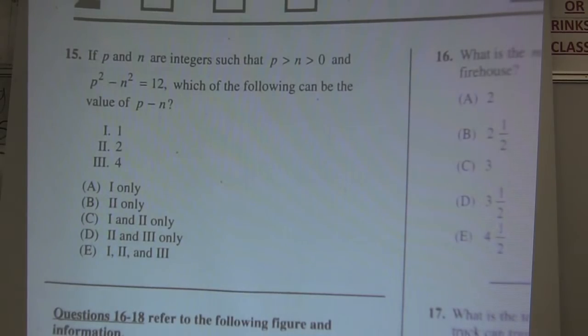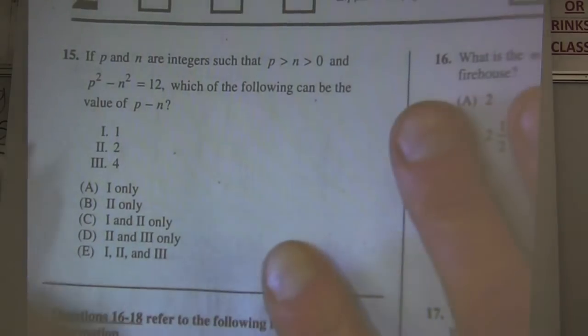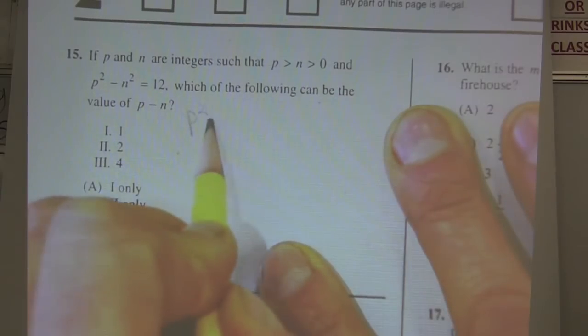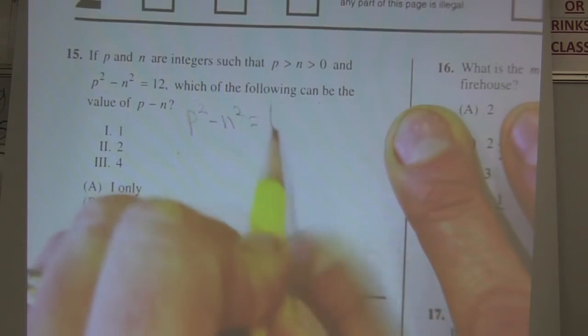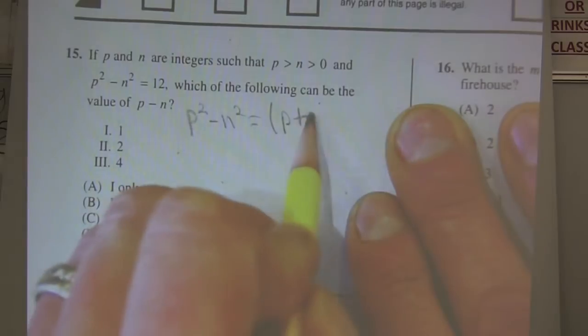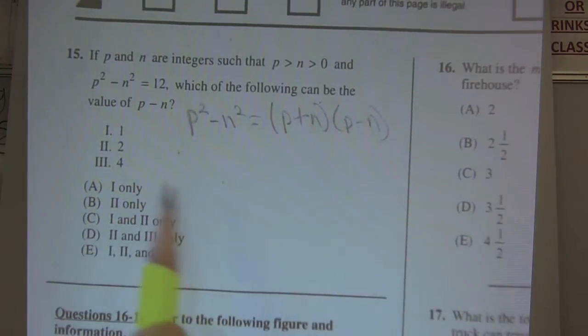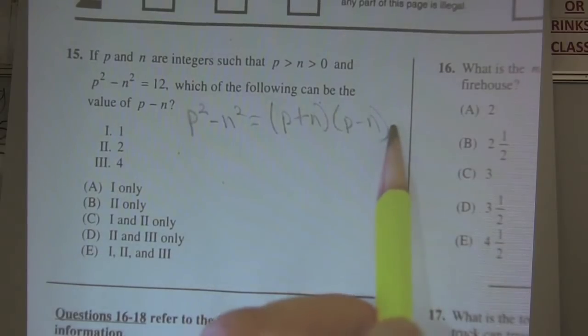Which of the following can be the value of p minus n? Since that's one of the factors. Now you need to recognize that this is a difference of squares. P squared minus n squared ends up being p plus n times p minus n. This still equals 12.